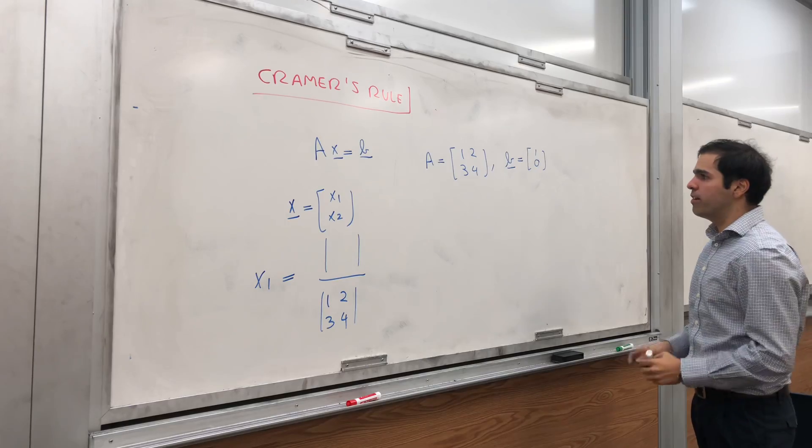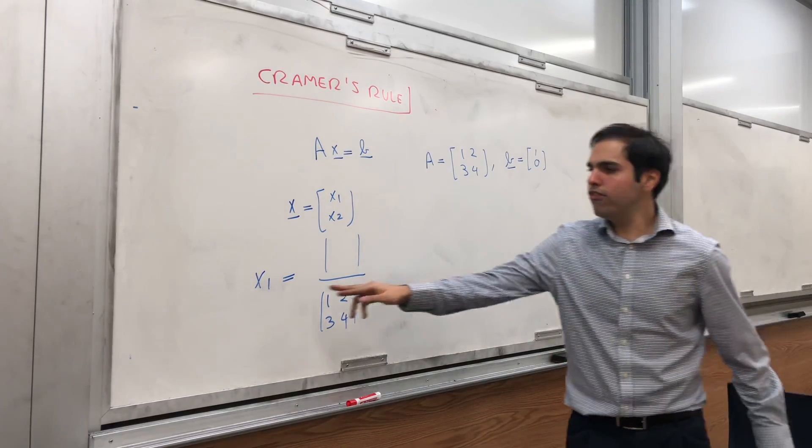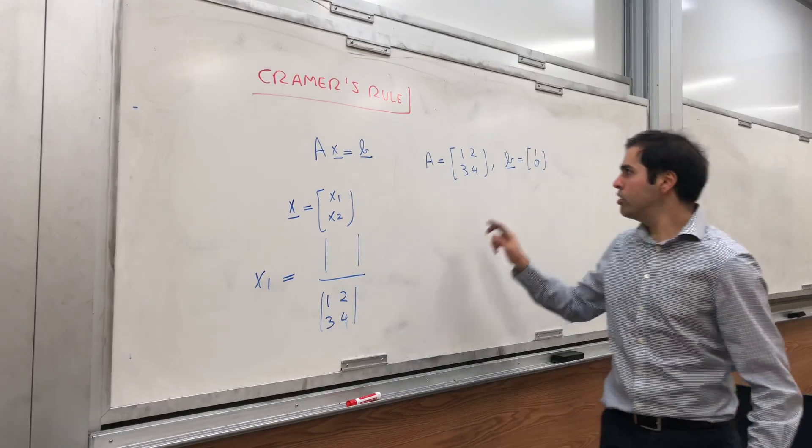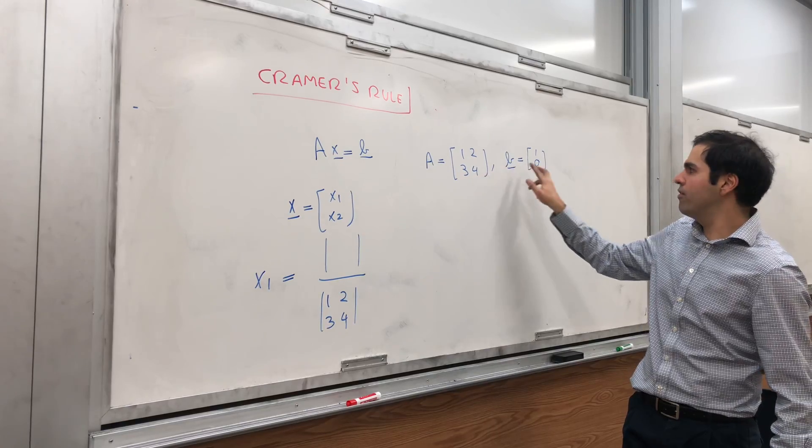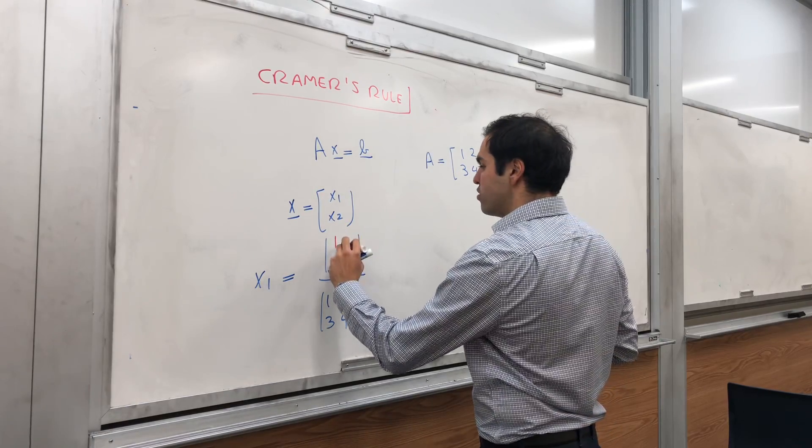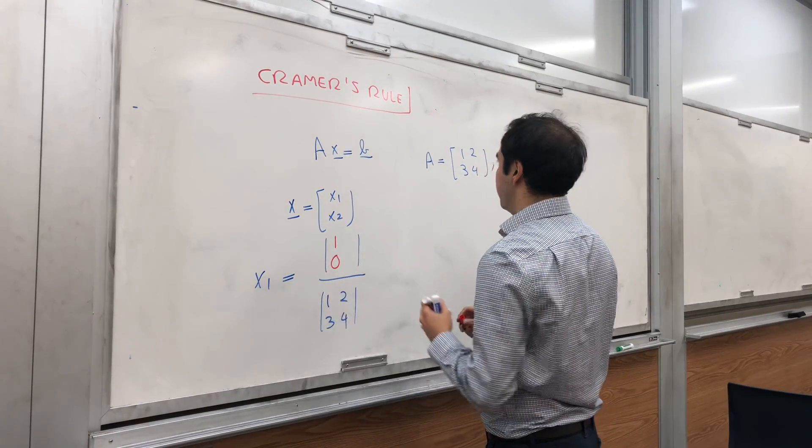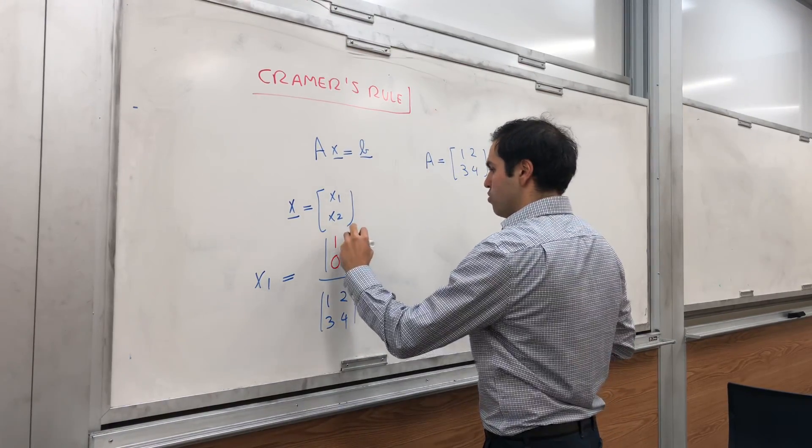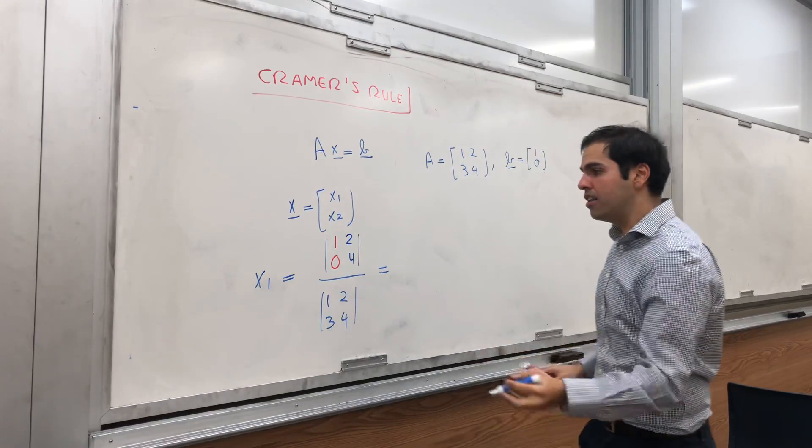To find the numerator, all you do for the first variable is replace the first column of A by b. So it's like A except the first column here becomes [1, 0], and then [2, 4], and then you calculate it.